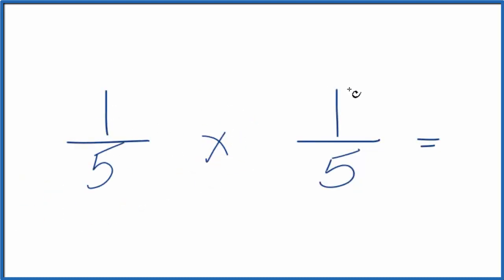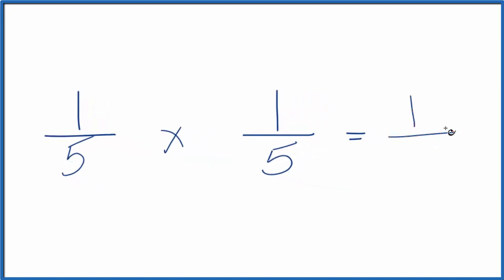So now we have one-fifth times one-fifth. And in that case, we just multiply one times one, that gives us one, and then five times five, that gives us 25.